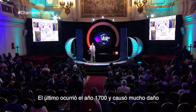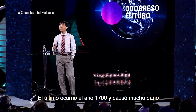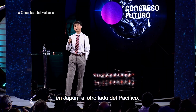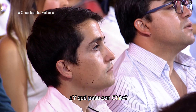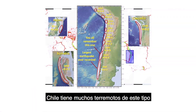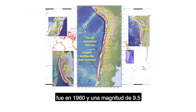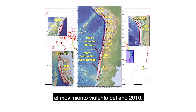The last Cascadia earthquake occurred in 1700, and the tsunami it generated caused a lot of damage in Japan on the other side of the Pacific. In Chile, there are many earthquakes of this type, including the largest earthquake ever recorded on Earth in 1960, magnitude 9.5, and violent shaking again in 2010.